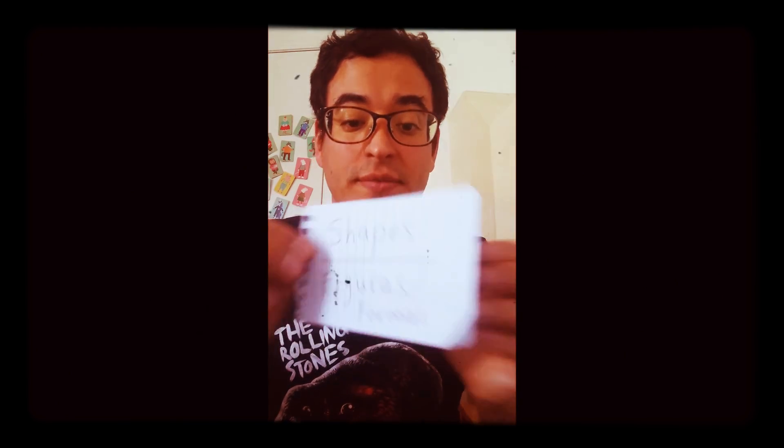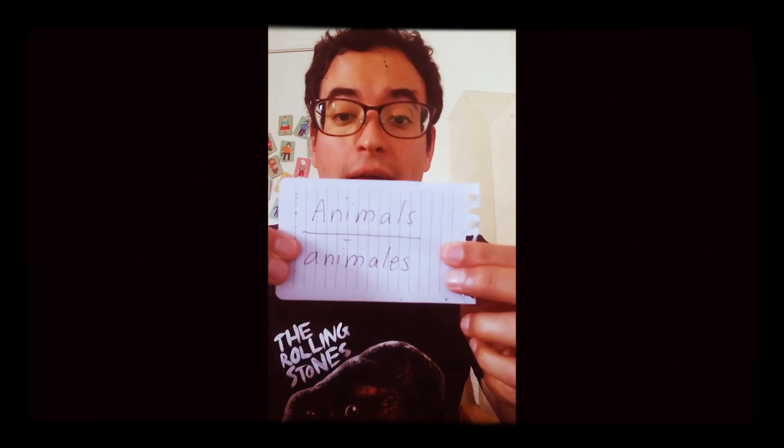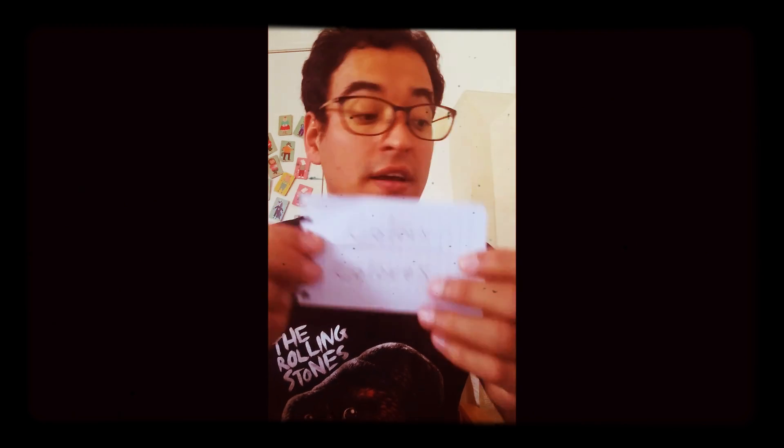I almost forgot about the extension! The extension is very simple — you can do other categories. We did letters and numbers, but you can also do shapes, food, animals, and colors. After the child has cut and organized everything, they can use the pieces in the cans to make artwork like collages. That way you're doing so many things: cutting, organizing, learning about math and literacy, and finally ending with art, which explores their creativity and imagination.